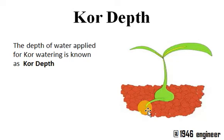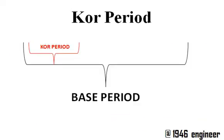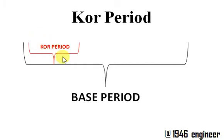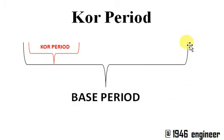The depth of water applied during core watering is known as core depth, and the period within the base period during which core watering is done is known as core period. The base period is nothing but the period between the first watering done to the crop and the last watering done to the crop.